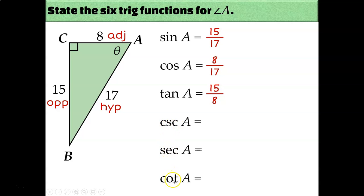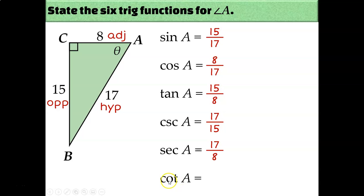Remember that cosecant, secant, and cotangent are reciprocals of sine, cosine, and tangent. So instead of re-examining the diagram, just flip the fractions already written. The cosecant of angle A is 17 over 15. The secant of angle A is 17 over 8. The cotangent of angle A is 8 over 15. These six fractions are the six different possible ways to compare two of the three sides of this triangle.